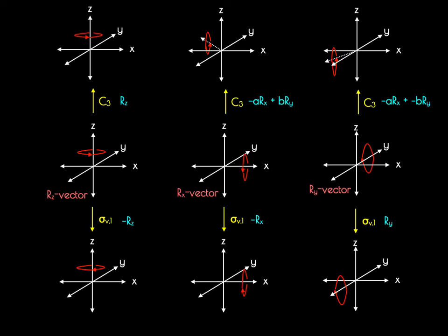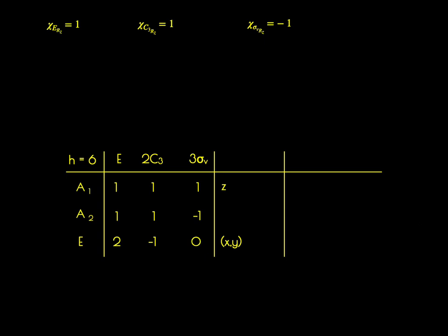So Z has the following characters for its irreducible representation: 1, 1, negative 1 — that corresponds to the A2 representation of the group. So RZ transforms as A2.